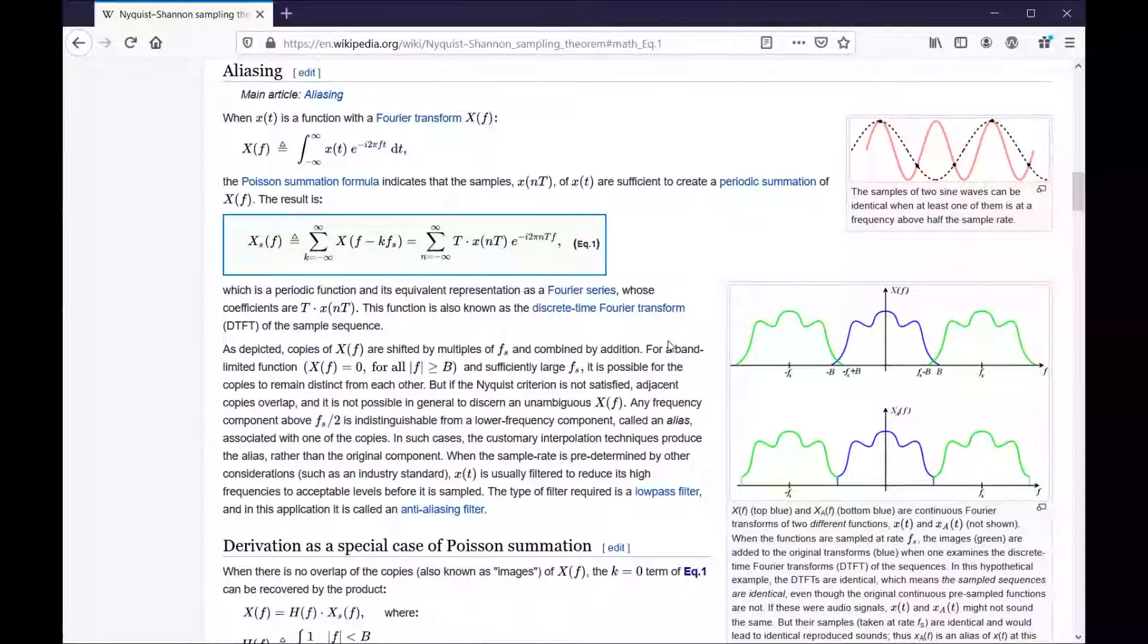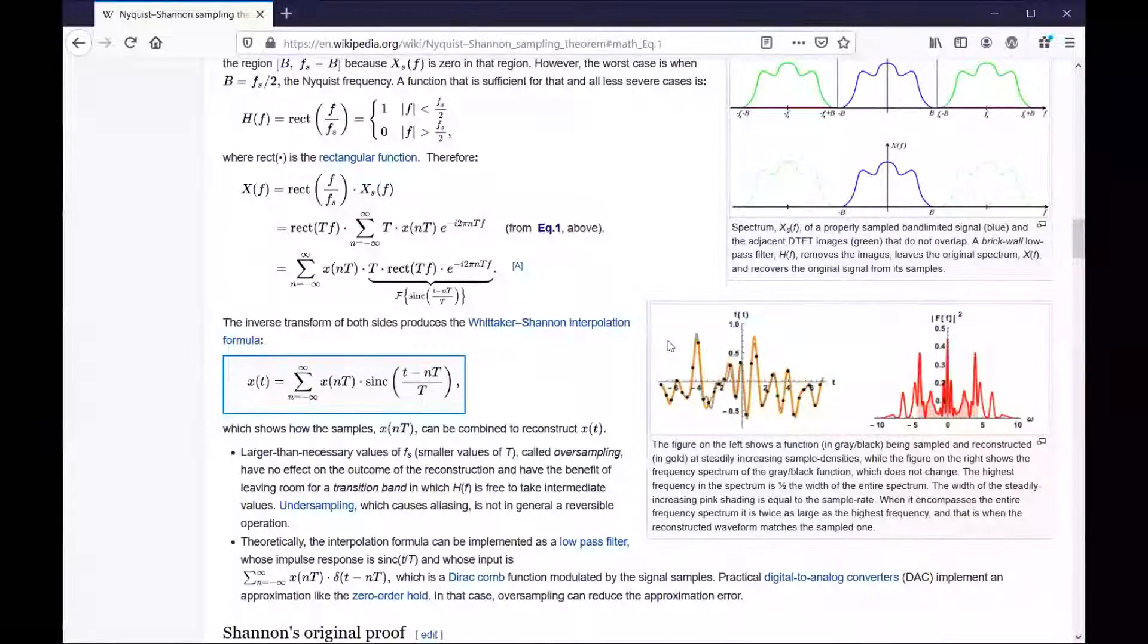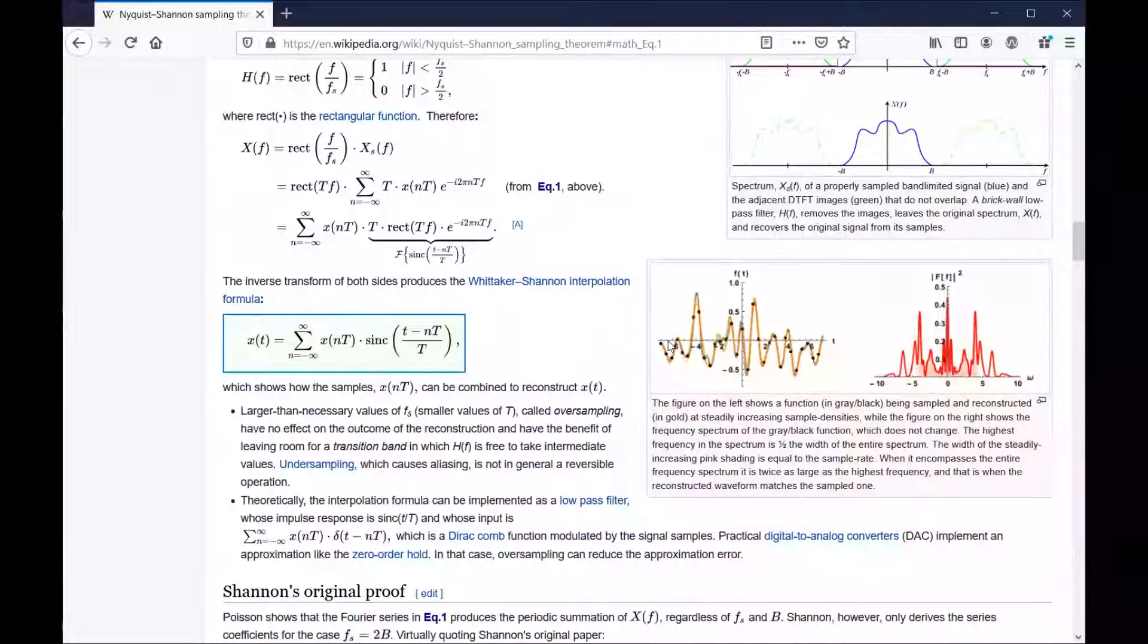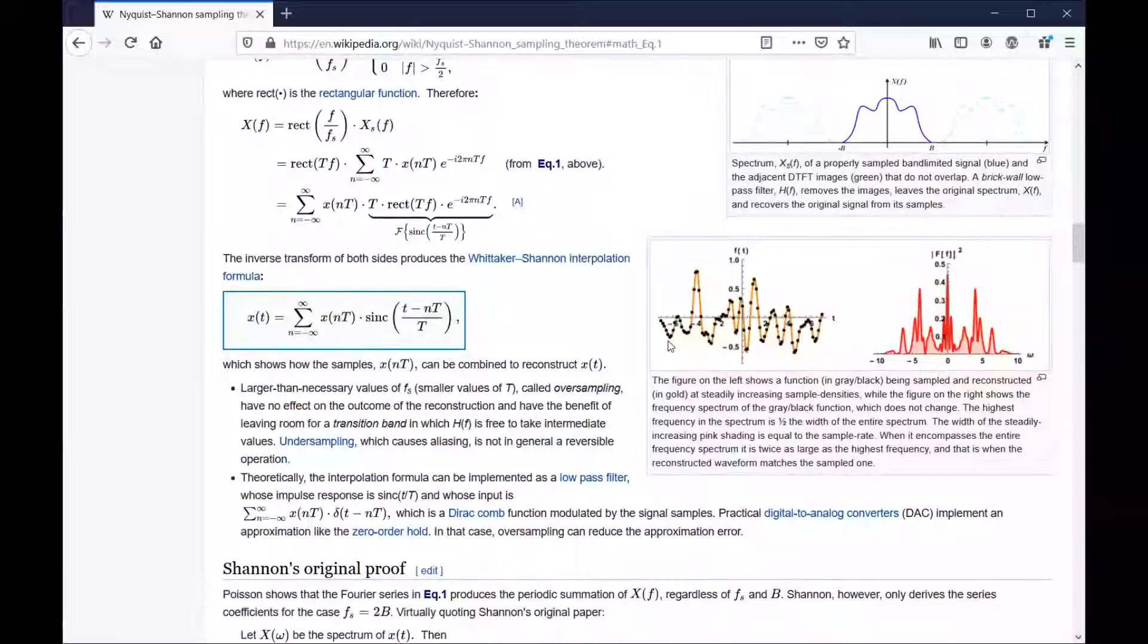Okay, so now that we understand equation one let's go back to the proof. We can do that very easily with heading level navigation. Shannon's original proof. Poisson shows that the Fourier series in equation 1 produces the periodic summation of x of f regardless of f sub s. Ah, and now we know what f sub s is and we know what x of f is.